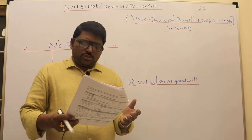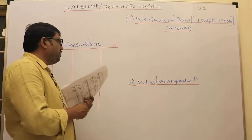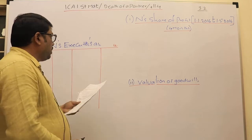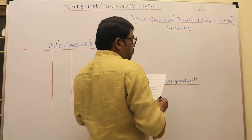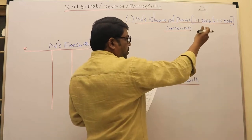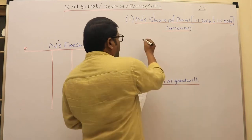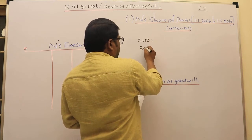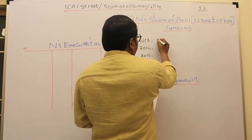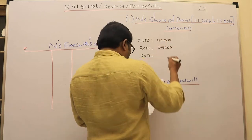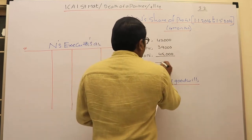We need two working notes: first, share of profit for the 4-month period; second, share of goodwill. Then we open N's executor's account. For the profit working note, we give profit from January 1st to May 1st — 4 months — based on the 3 completed years' average. The profits given are: 2013 — 42,000; 2014 — 39,000; 2015 — 45,000.